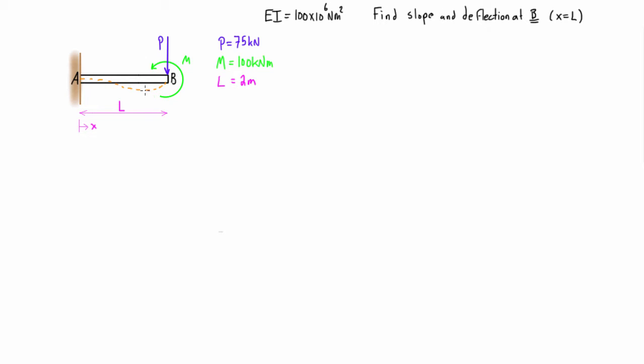To do this using the method of superposition, the actual deflected structure with both loads on it is equal to the sum of the deflected structure with just the point load on it and the deflected shape with just the moment acting on it. The point load pressing down is going to have the tendency to bend down, and then an applied moment on the end is going to be bending up.